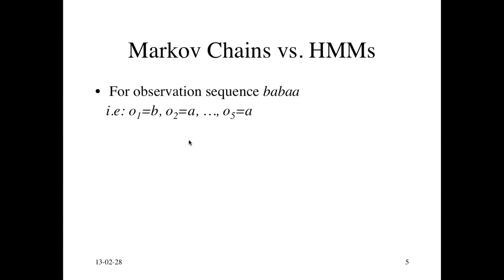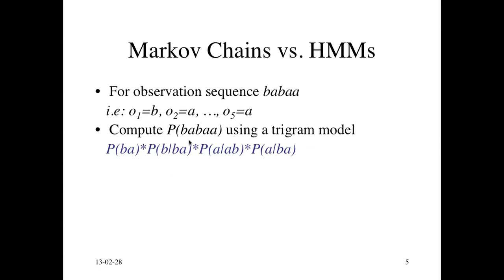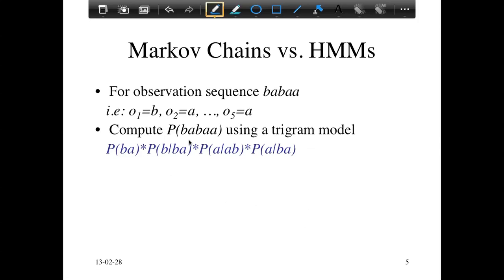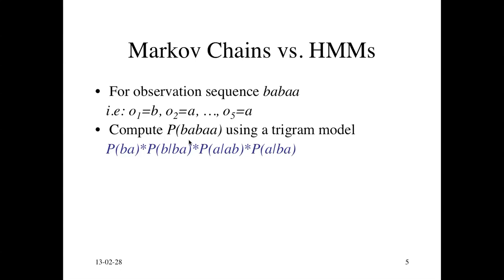So what happens in a trigram model? The trigram model actually has a larger context. First you generate the first two letters B, A, and then you generate B given the previous two. So the reason why we call it a trigram is because you have a B given the previous two observations B and A. So how do we represent this as a Markov chain?